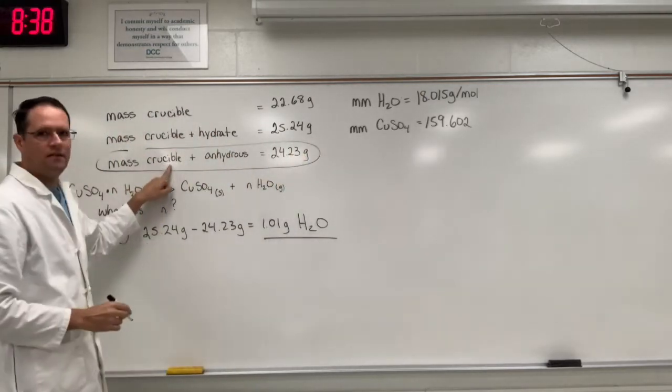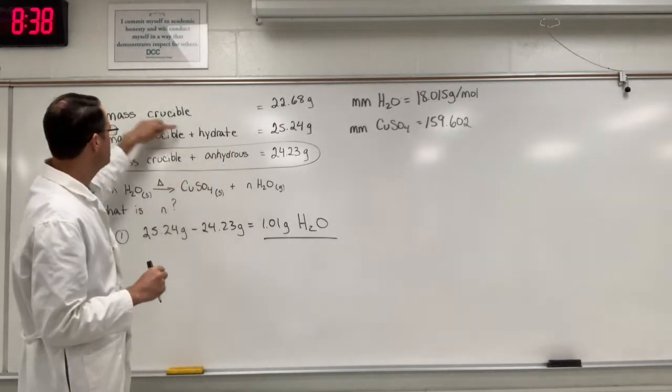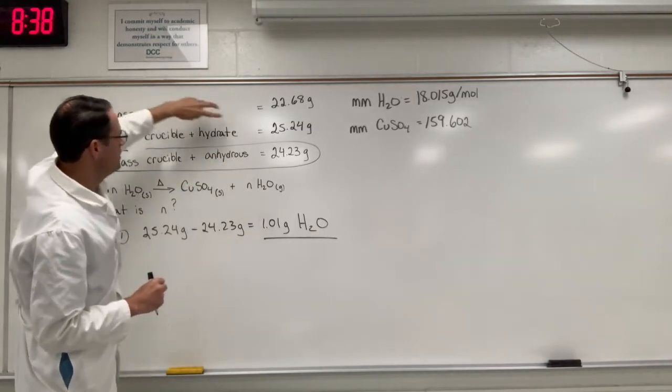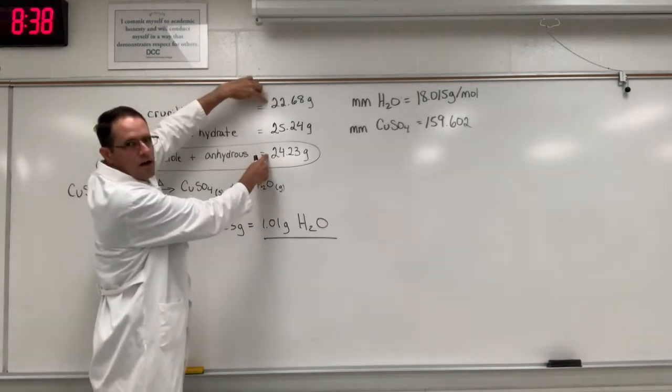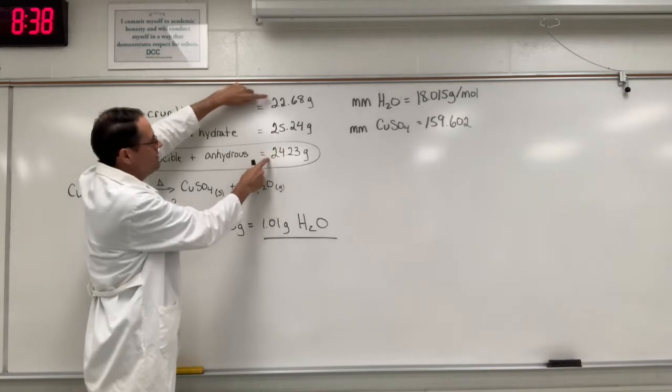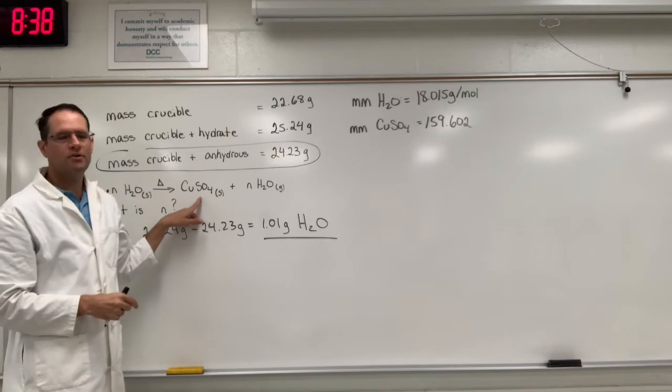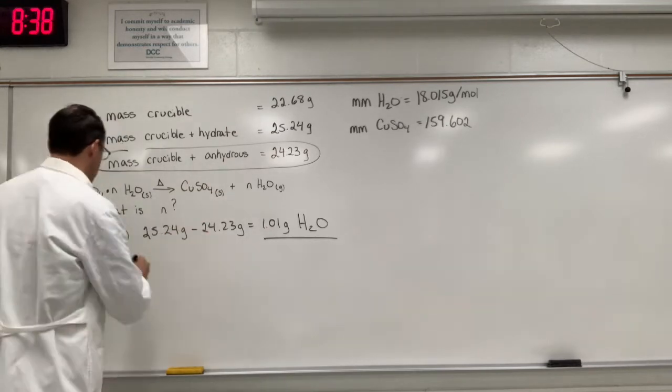Now you can see from this entry here, this is the mass of the crucible and the dry salt, the dry substance. And if we subtract the mass of the crucible, this difference, there's no water in this or this mass. So if we subtract these two numbers, we will find the mass of just the pure dry copper sulfate. So let's do that.